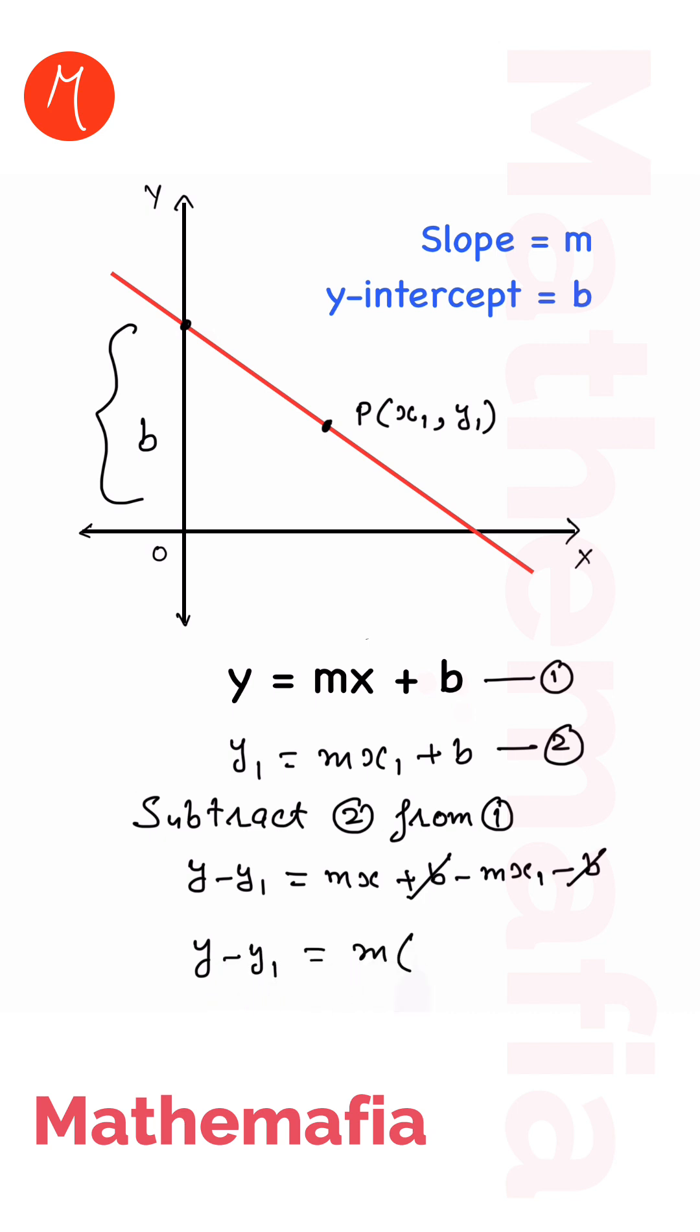And this is known as point-slope form. This means if x1, y1 is a point that lies on the line and m is the slope of the line, then we can directly write the equation of the line using this formula.